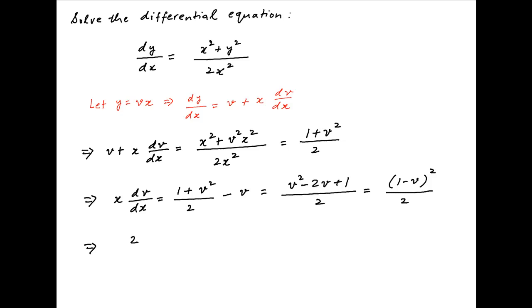Separating the variables, we get 2/(1 minus v)² dv equals dx/x.